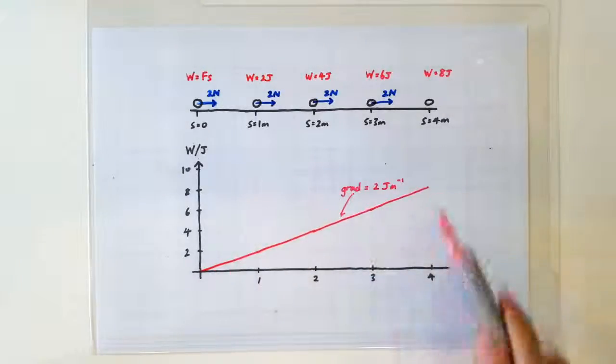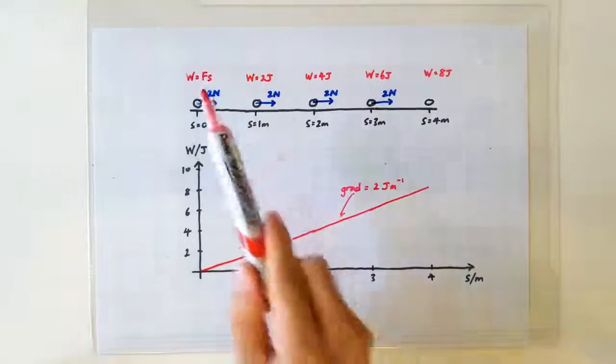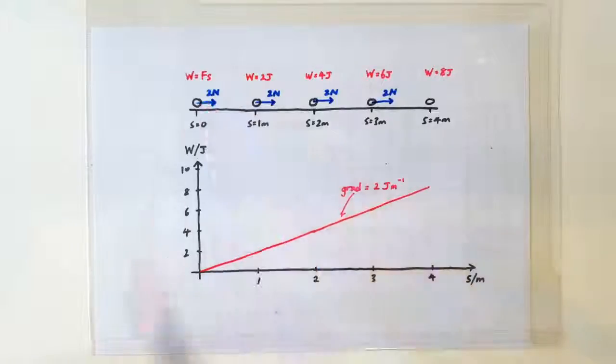The gradient of the graph is 2 joules per meter. 2 joules per meter actually corresponds to 2 newtons.